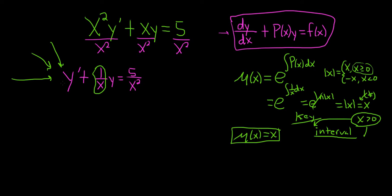So let's go ahead and do that. So multiplying by x, we'll get xy prime. Multiplying by x here, the x's will cancel, so we'll just get y. And then multiplying by x here, we'll lose a copy of x, so we get 5 over x.